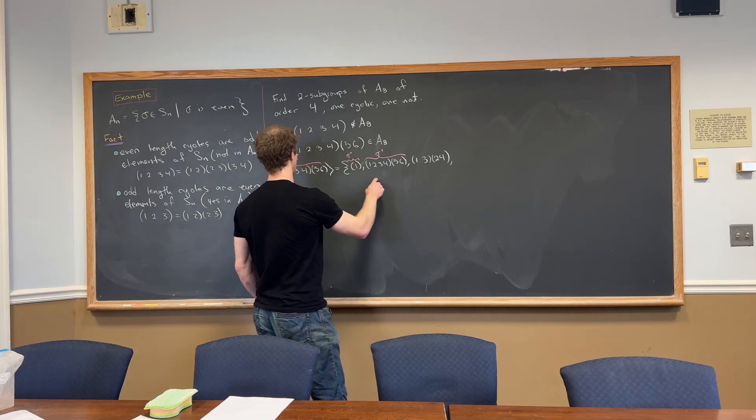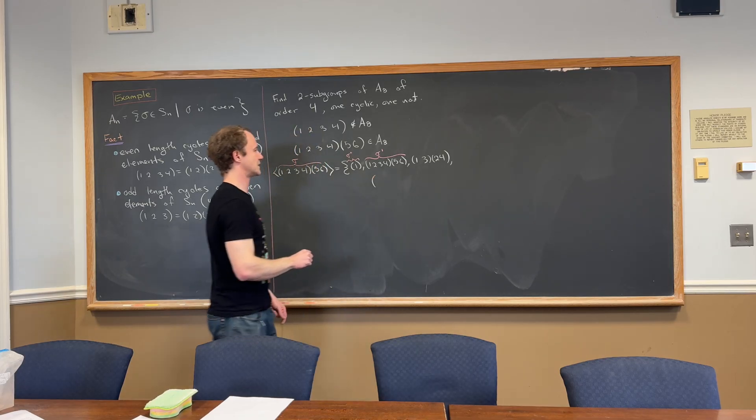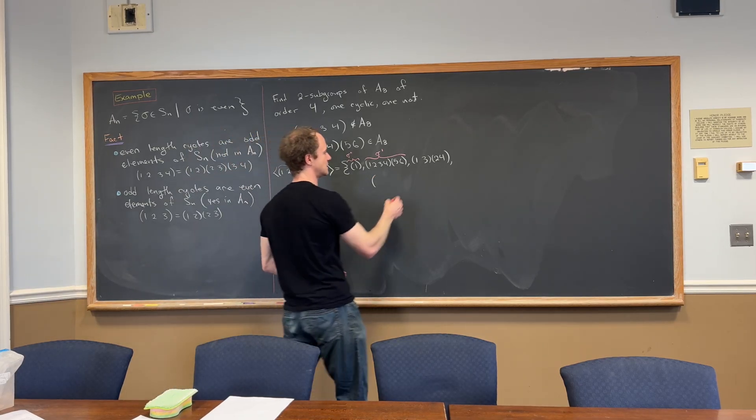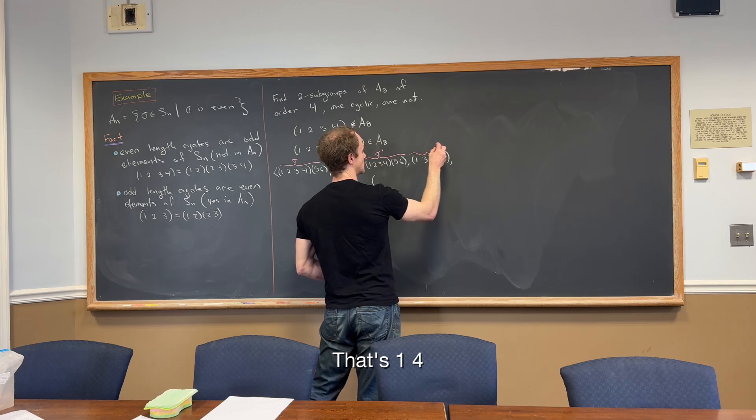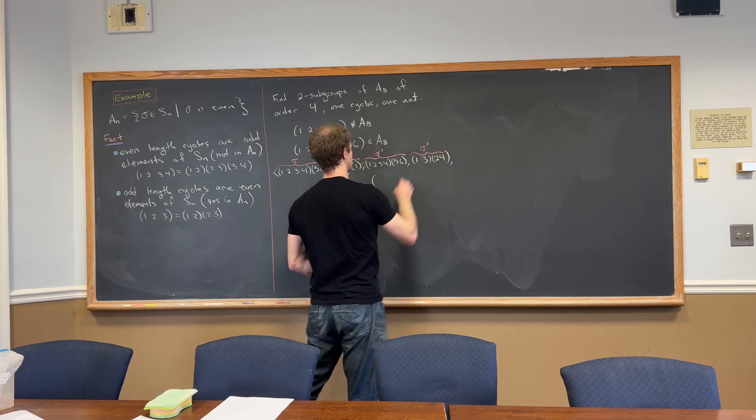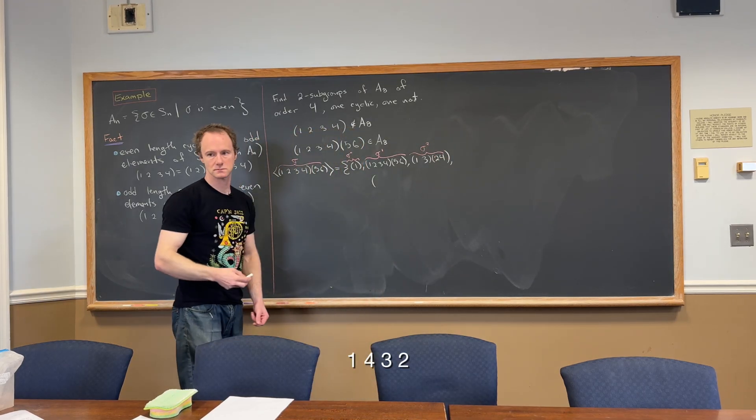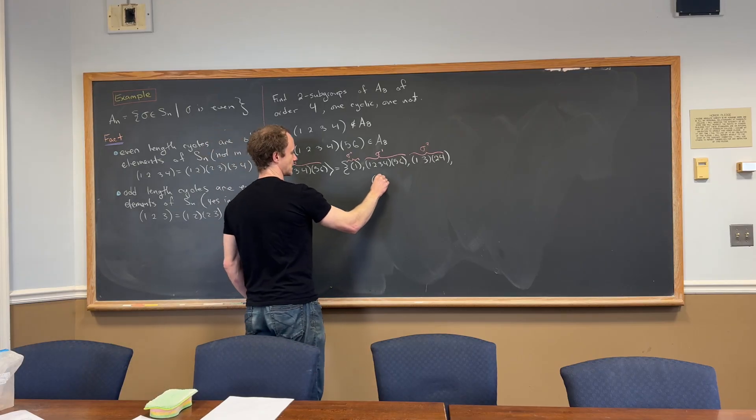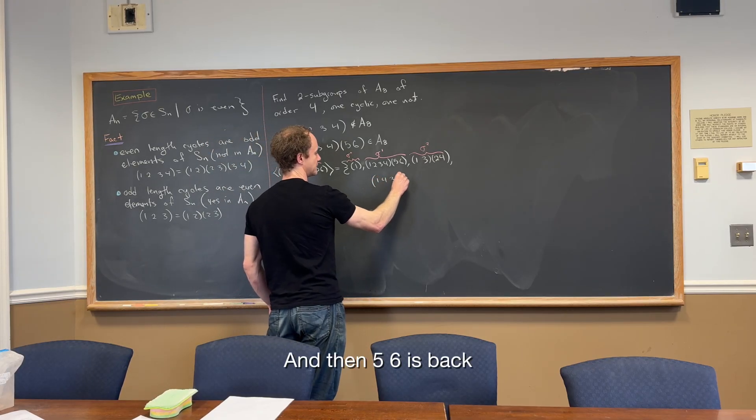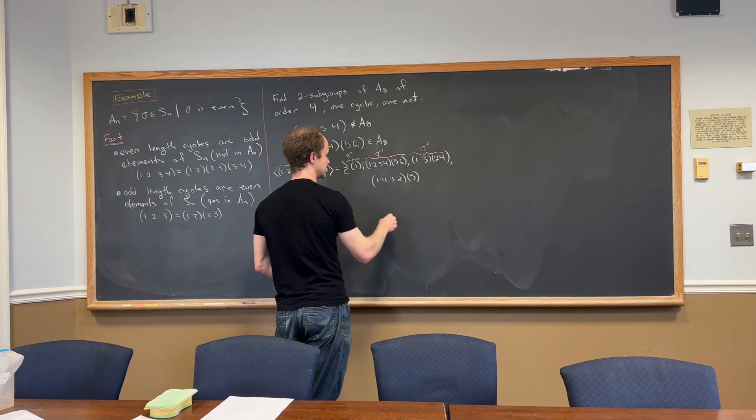And then let's see. We've got one more element here. Maybe we'll put it on this line. And what would that be? So that would be sigma cubed. That's (1,4,3,2). That's right. (1,4,3,2). And then (5,6) is back.